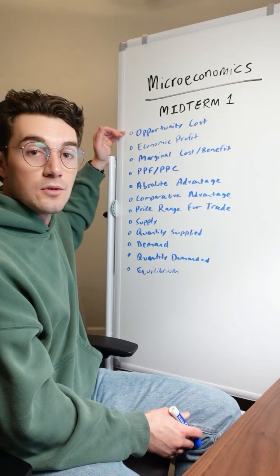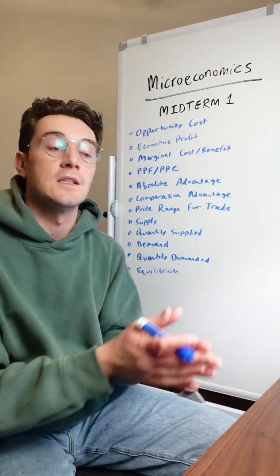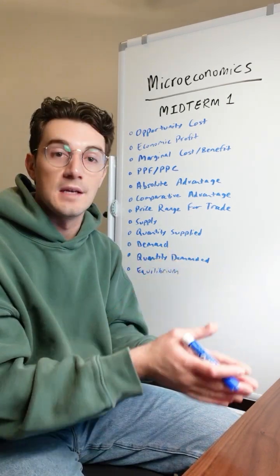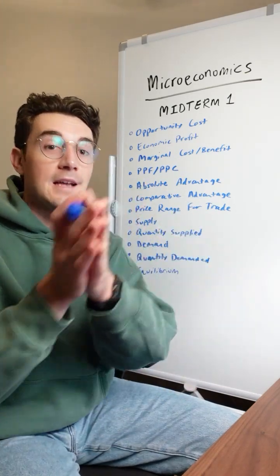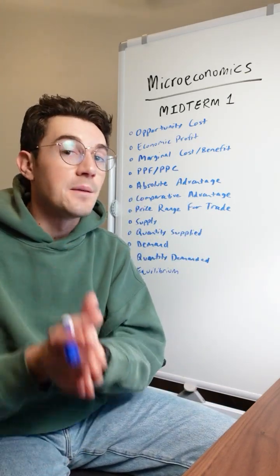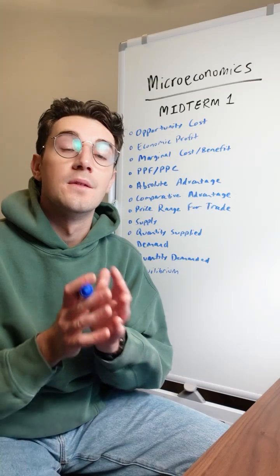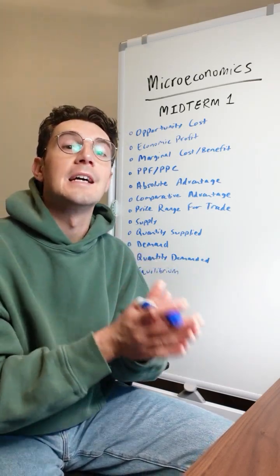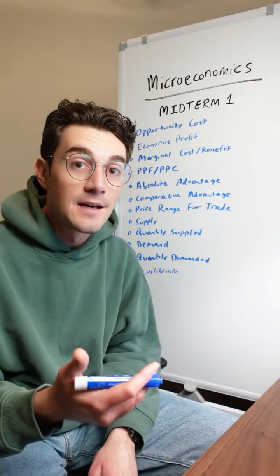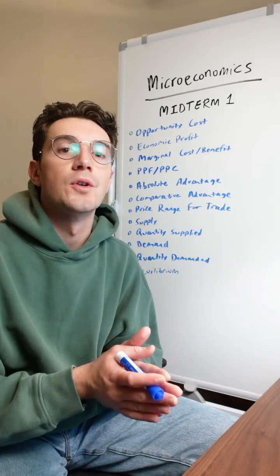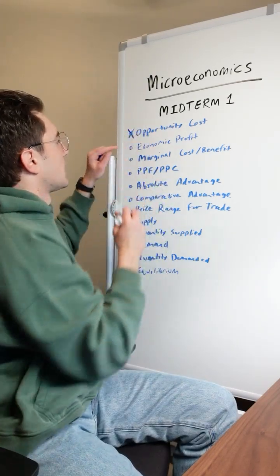Starting with opportunity costs: this is the explicit or stated cost of a choice that you're making — typically like an expense or something like that — and add to it the implicit cost of that choice, which means the value of the next best alternative that you pass up. This is typically the income that you could have earned from that next best choice.